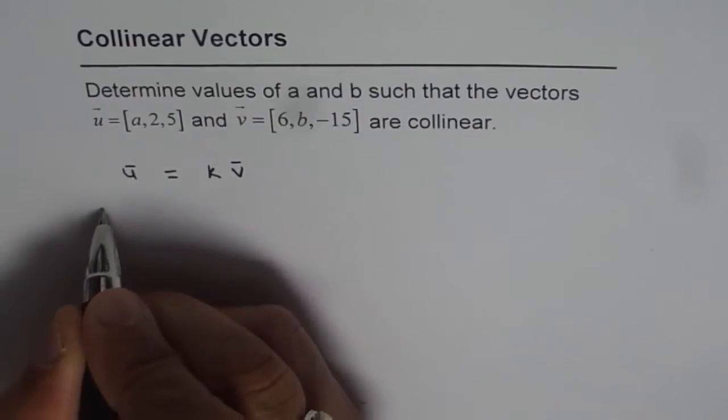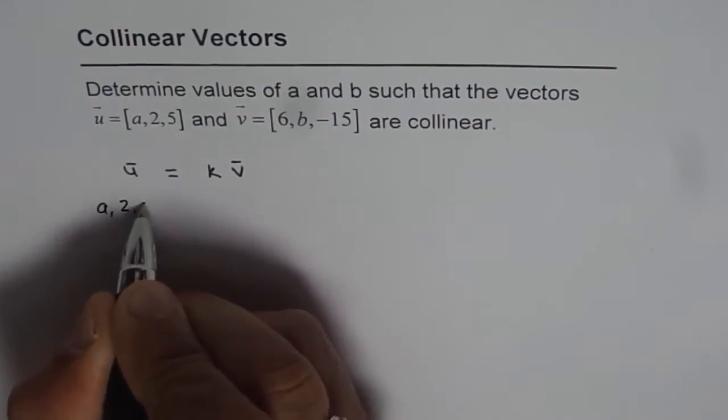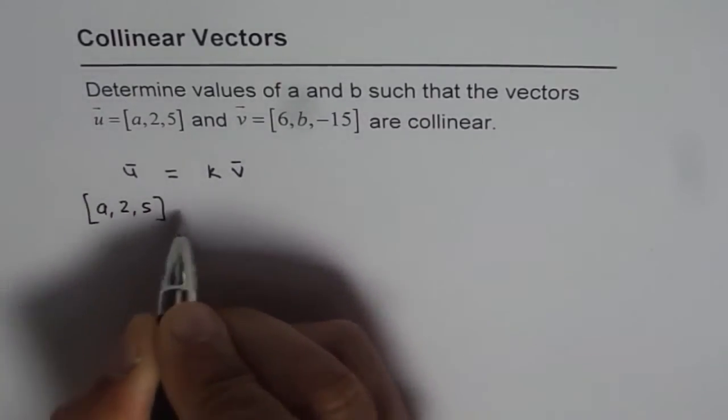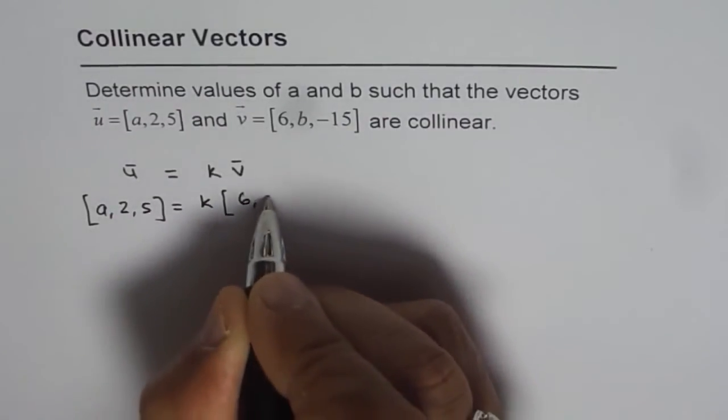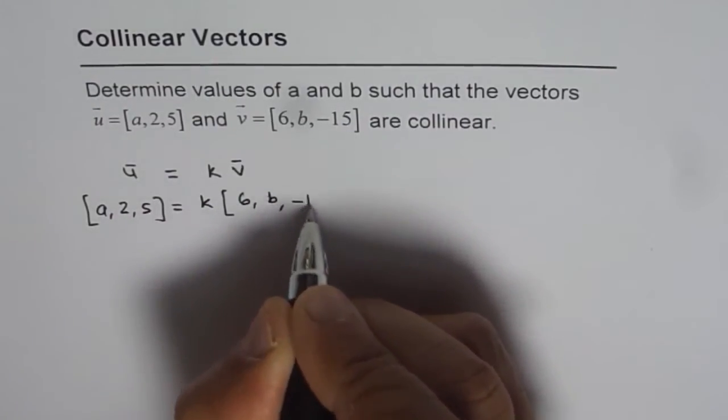So what is u? u is [a, 2, 5]. That should equal k times v, which is [6, b, -15].